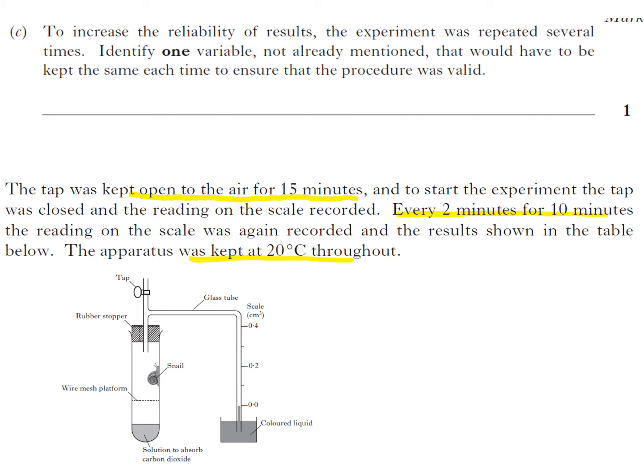There are a couple of things that potentially we could say here. For example, we've got a solution to absorb the carbon dioxide, so the volume of that or the concentration of that would make some impact to how quickly the carbon dioxide is being absorbed - so this would be a decent one to go with. I personally think this is where I would go. You'd be looking for the same mass of snail, the same species of snail, things like that. You could also argue that the glass tube itself has to be of the same diameter so that you get the same movement through.